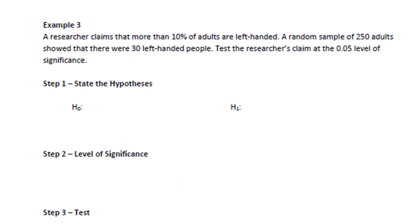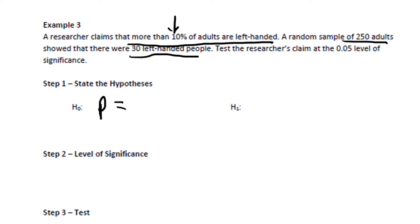Here's a third example. A researcher claims that more than 10% of adults are left-handed. This is a one proportion test because we're comparing the proportion with a certain characteristic — being left-handed — to 10%. We have 30 out of 250 adults who are left-handed as our qualitative sample data. The null hypothesis is P equals 0.10. The alternative hypothesis H1 compares P to 0.10, and since the claim is that more than 10% are left-handed, we use P is greater than 0.10.